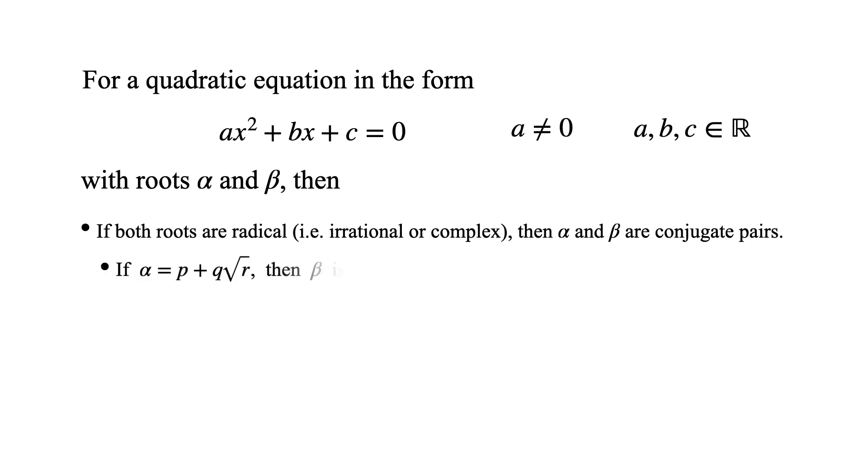This means that if alpha is p plus q square root r, no matter whether r is positive or negative, then beta must be p minus q square root r.